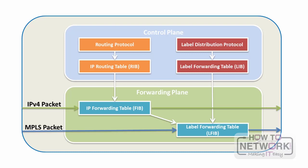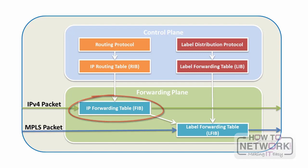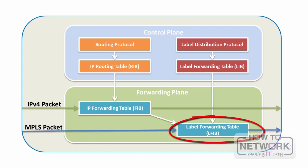CEF contains a FIB, or forwarding information base, that is a copy of the routing table information in cache memory and is used for quick forwarding. MPLS contains a label forwarding information base, LFIB, which is for label-based traffic exchange.